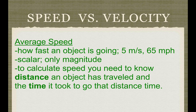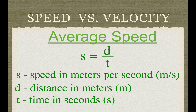Average speed is how fast an object is going — for example, five meters per second, 65 miles per hour, or 110 kilometers per hour. Speed is a scalar, described only by the magnitude. To calculate the speed, you need to know the distance an object has traveled and the time it took. The formula is: average speed (S with a bar) equals distance divided by time. S is speed in meters per second, D is distance in meters, and T is time in seconds.